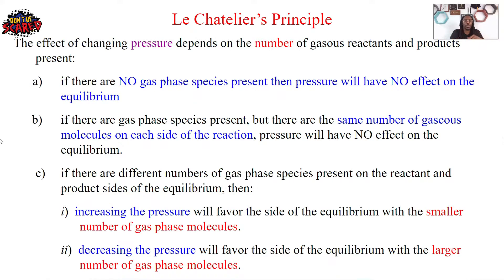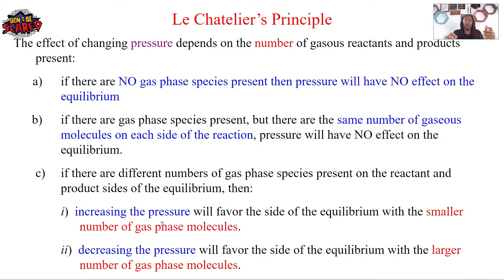Now let's talk about when pressure actually impacts equilibrium. If there are a different number of gas phase species present on the reactant and product sides of the equilibrium, then increasing the pressure will favor the side with the smaller number of gas phase molecules, and decreasing the pressure will favor the side with the larger number of gas phase molecules.